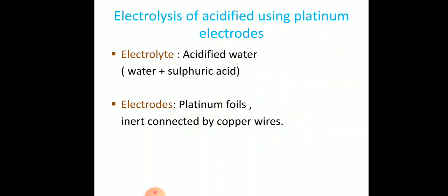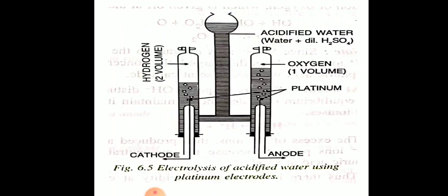Let us start with the electrolysis of acidified water using platinum electrodes. The electrolyte we are using is acidified water — that is, water with a small amount of dilute sulfuric acid added to make the water more conducting. The electrodes we are going to use are platinum foils, which are inert, connected by copper wires.